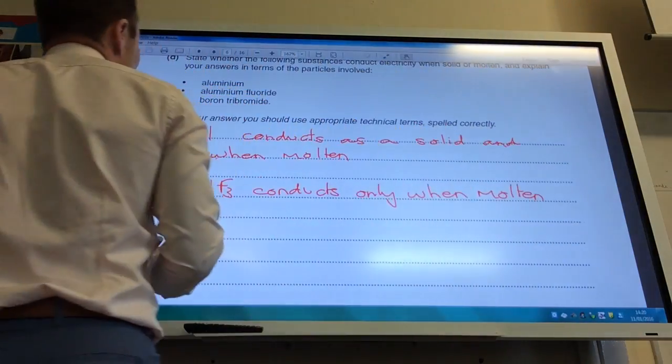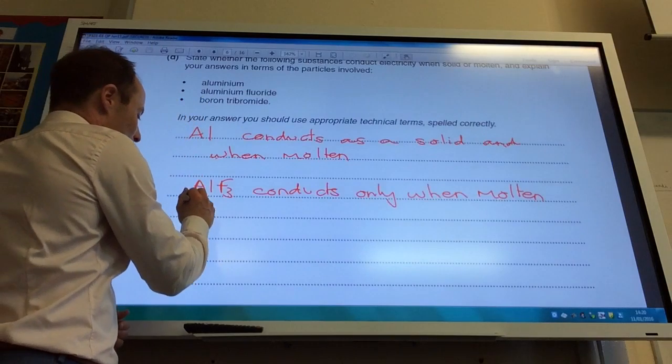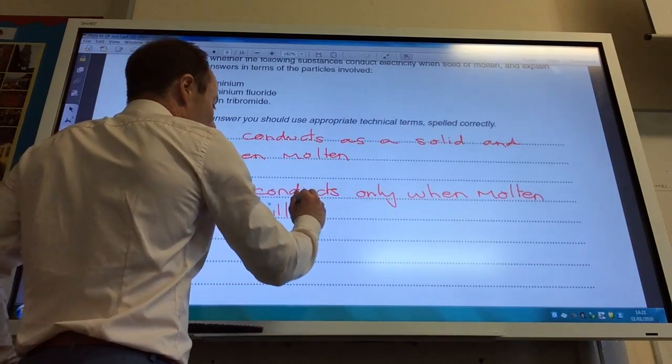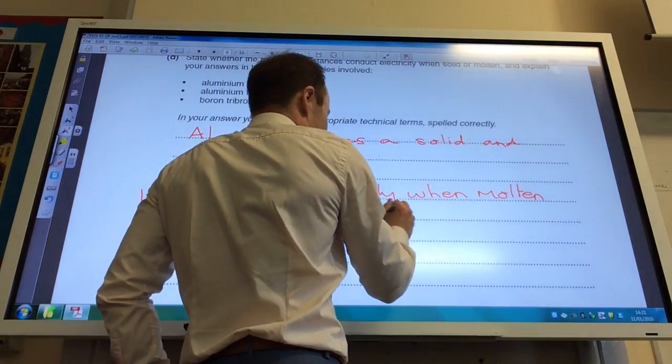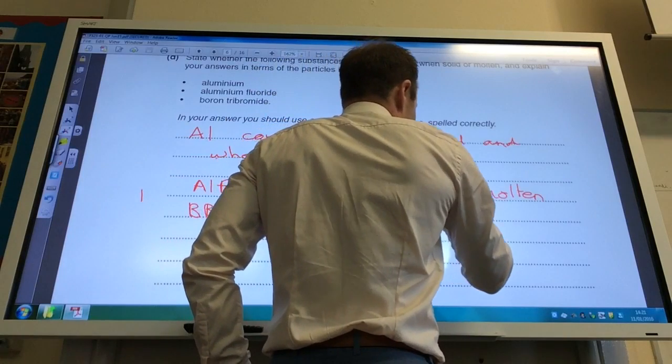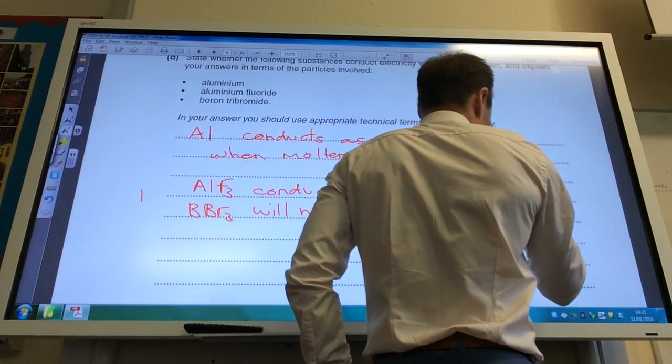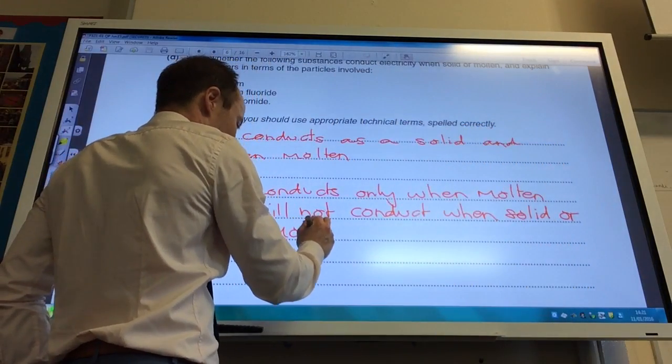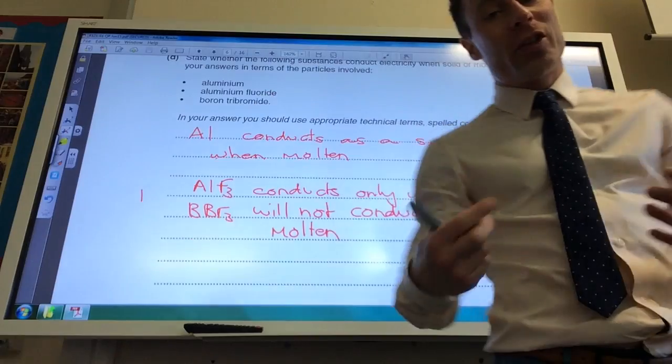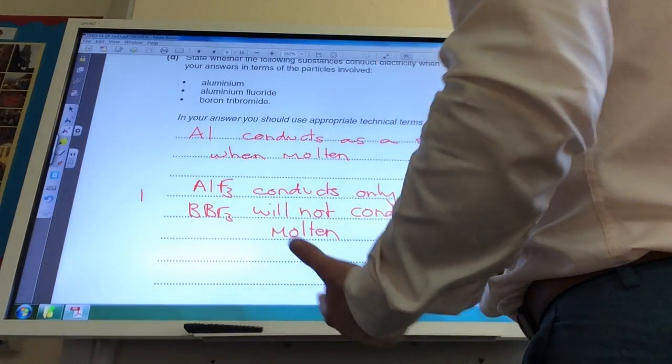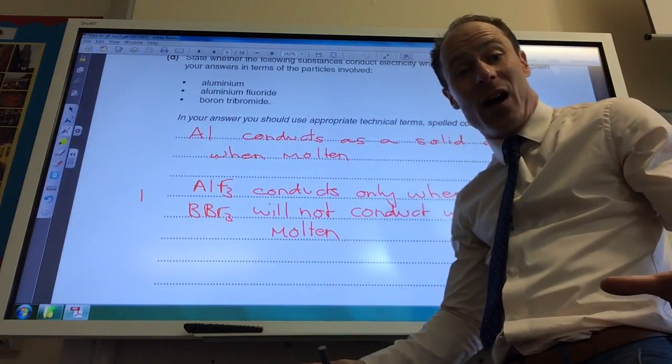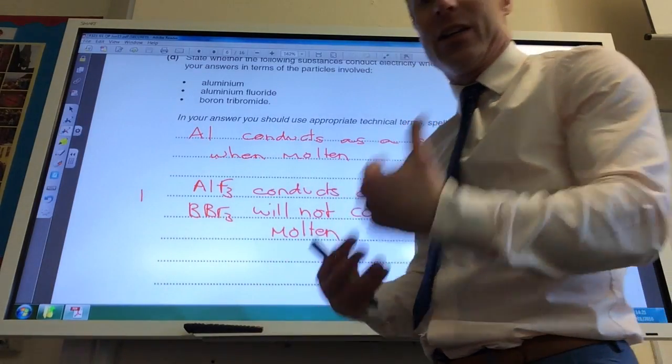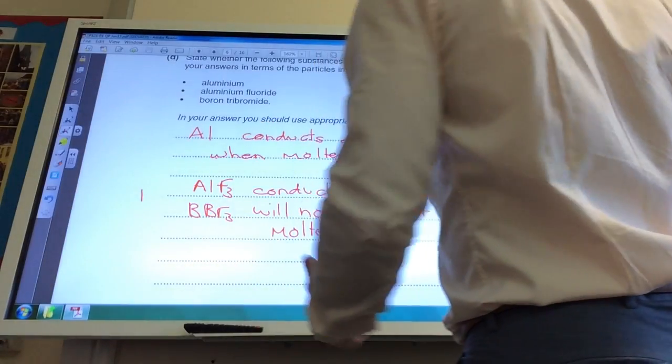And the final one they want me to talk about is boron tribromide. That will not conduct when solid or molten. Why is that? Well we've just looked at it, boron tribromide, it's covalent, it doesn't have any ions in it, there are no free electrons, so there are no free charged particles that can move. And therefore it will not conduct.